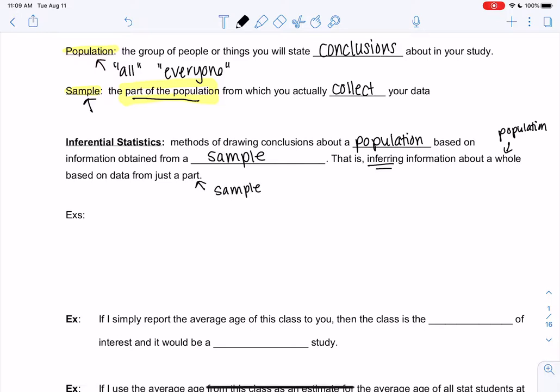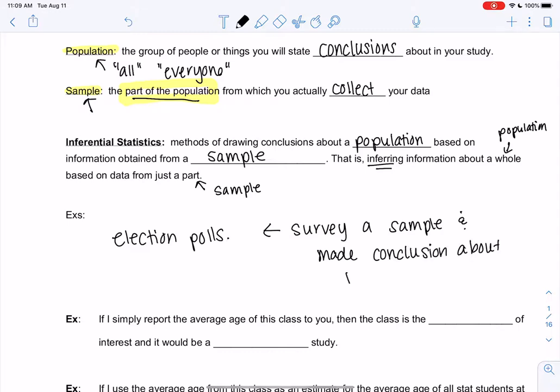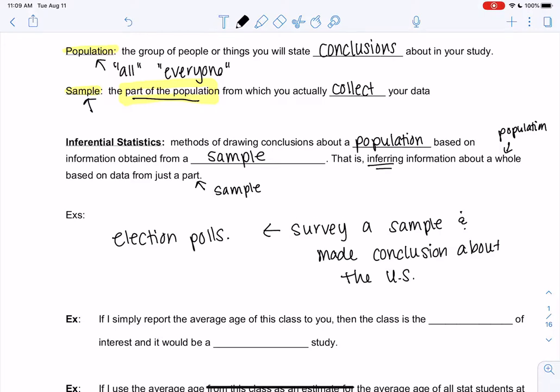So the easiest example to think of that is relevant right now would be like election polls. They probably didn't survey you, but they did survey a sample and made a conclusion about the whole U.S. And we'll see lots of examples as we go through the semester.